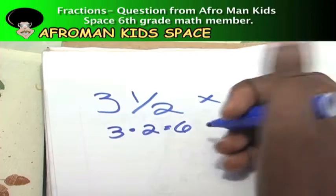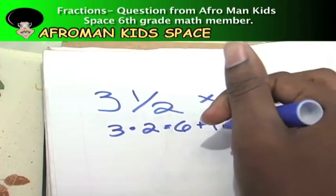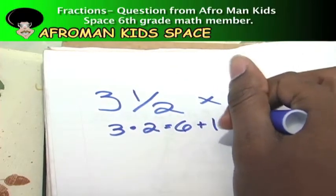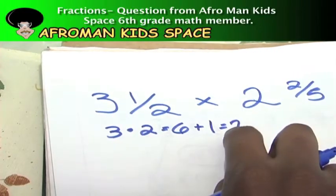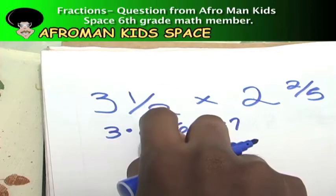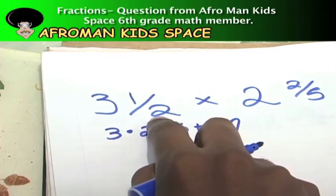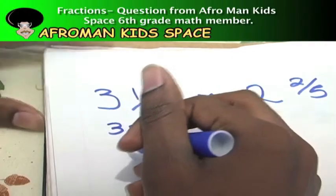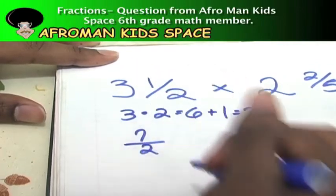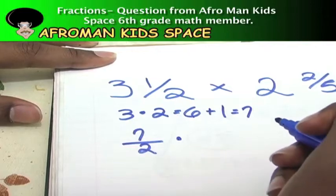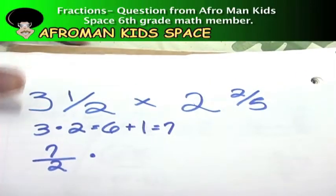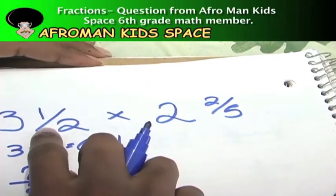And then what we do after that is we take the resultant number, the six, and add it to the numerator. So plus one, I think that gives us seven. Next, let's take the seven and just put it over the original denominator, the two. So we got seven over two down here.